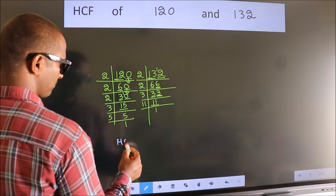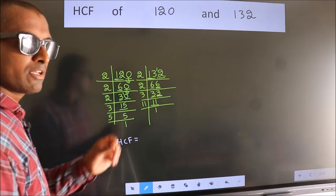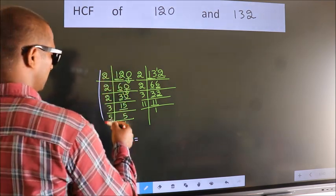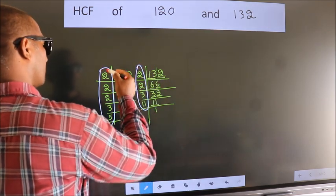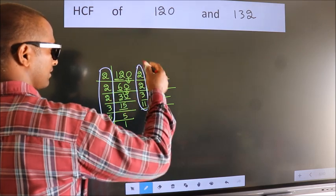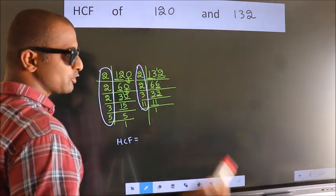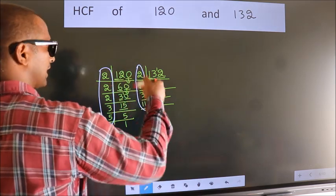Therefore, our HCF is, HCF is the product of the numbers which should be present over here and also here, over here and also here. So now let us find the numbers which should be present over here and also here.